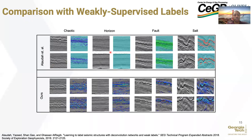We compare our results to a weakly supervised framework by Allauda, which shows the labeling of all four classes. In some cases, the weakly supervised framework is a little less conservative than our own labeling. Our labeling is often more associated with the edges of the structures. However, in the labeling of the salt, the labeling is the same by both the self-supervised and the weakly supervised methods.